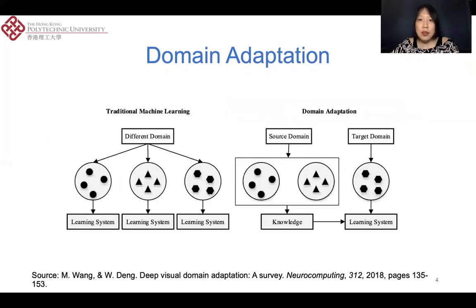Traditionally, we train different systems using different training data, and the trained systems can work well only on datasets that have the same or similar distributions as the training data. However, for domain adaptation, we want to learn the shared knowledge from some distributions so that the system trained using the shared knowledge can also work well on other different distributions.